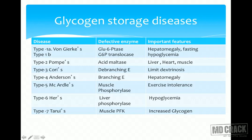Type 2 is Pompe's disease, caused by deficiency of acid maltase, the lysosomal enzyme responsible for glycogen degradation. Since lysosomes are present in many tissues — liver, heart, and muscle — Pompe's disease affects multiple organs. Death typically occurs by two years of age due to widespread lysosomal dysfunction.